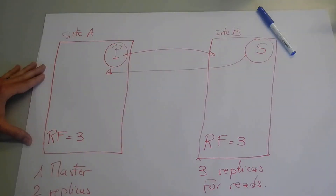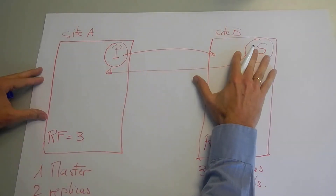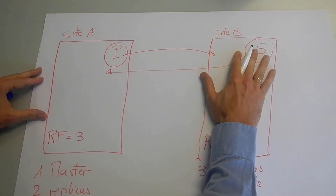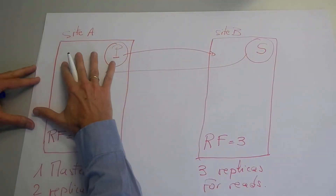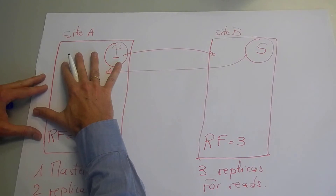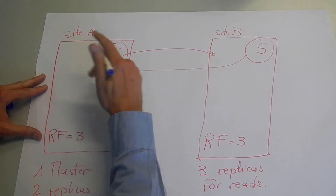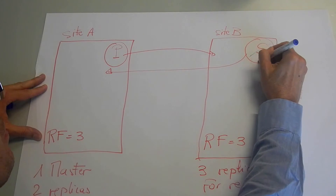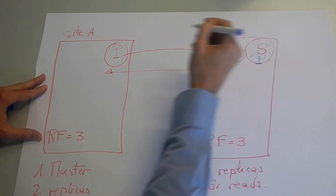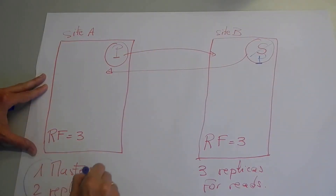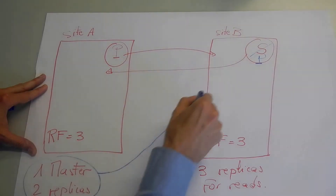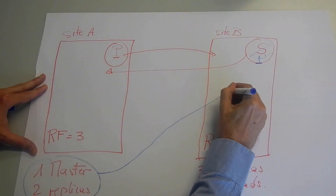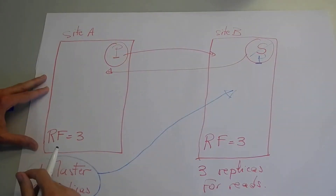A secondary zone failure does not have major impacts. For example, if this site fails, the system continues to operate. If the primary zone fails, we must perform a failover, which tells the surviving zones to remove a quorum and to downgrade the failed primary to secondary. This is the foundation of NoSQL MAA. Dennis will discuss the concept of durability, which will tie everything together.